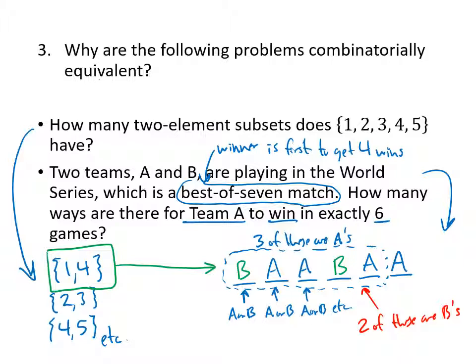The reason why this is a useful thing to be able to do is that this first question is much easier to solve. We're going to find a formula very soon for how to find the number of two element subsets of a set of size five. Thinking about series and games like this is a lot trickier if you don't realize that you can make a correspondence between that seemingly harder question and the easier question about subsets. That's why combinatorial equivalence is an important idea.